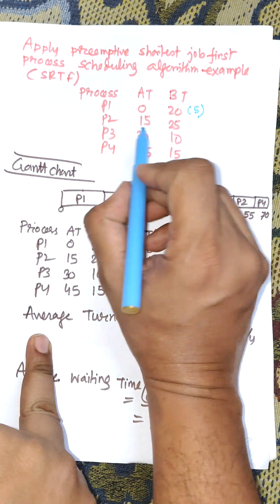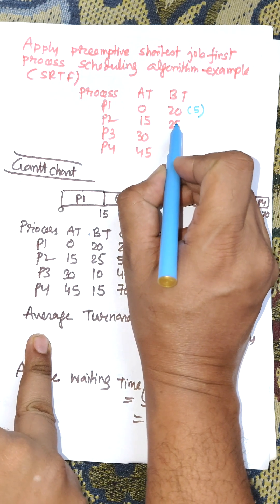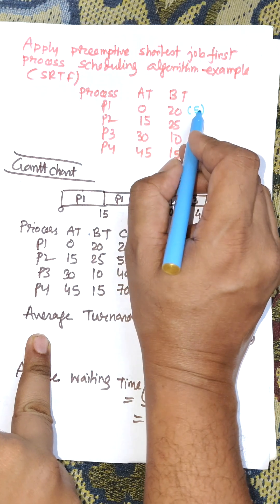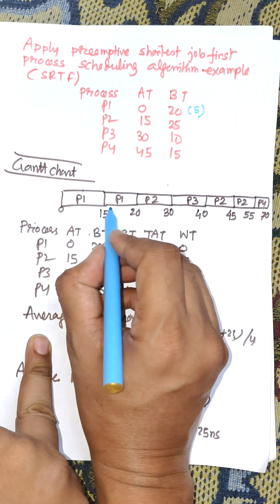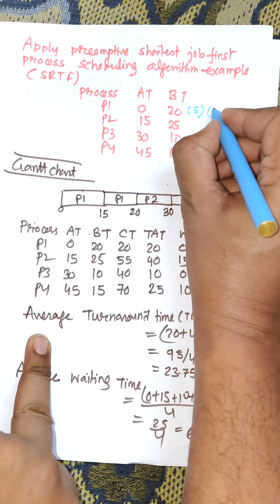The remaining time for P1 is 5 and the next process P2 has burst time of 25. Among 25 and 5, P1 is the smallest, so P1 will be selected again for execution. It will continue execution and finishes.